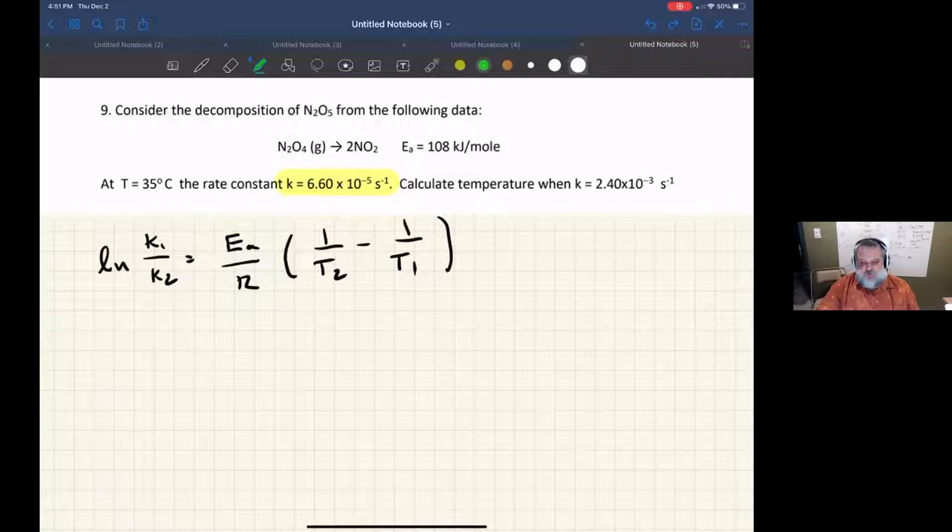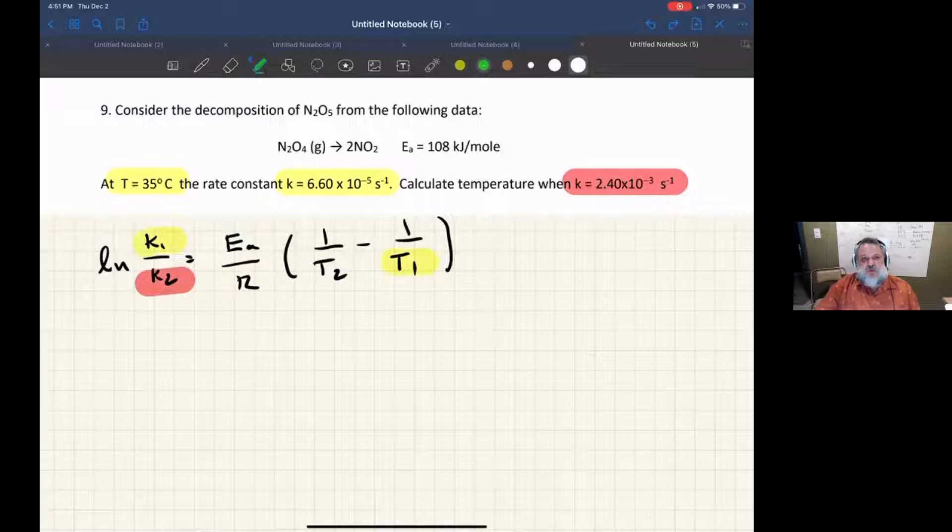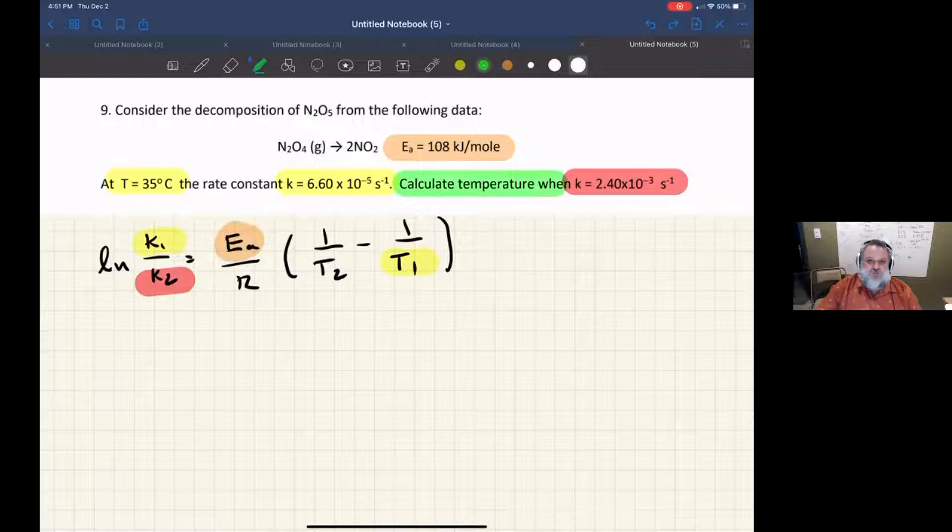I give you a rate constant, so let's call it K1. I give you another rate constant, let's call that K2. And I give you a temperature that'll go with that first rate constant, we'll call it T1. And I also give you the activation energy. It's asking you to calculate the temperature associated with T2.